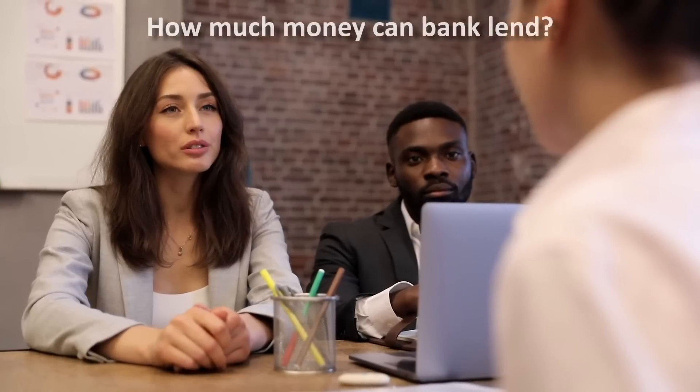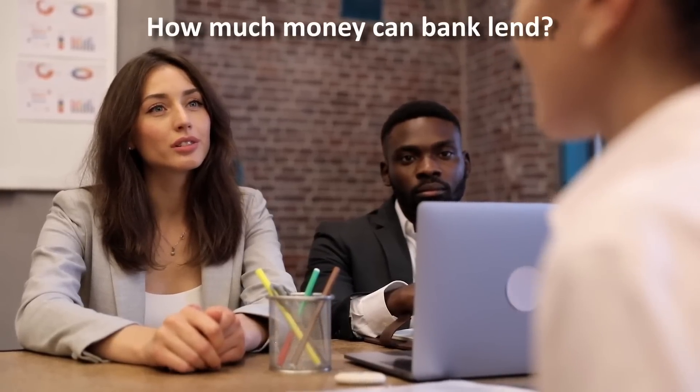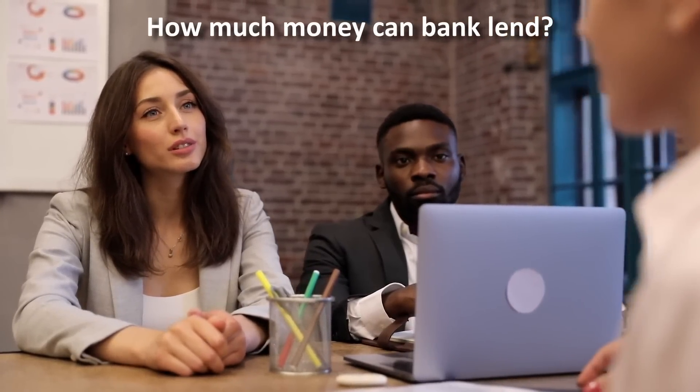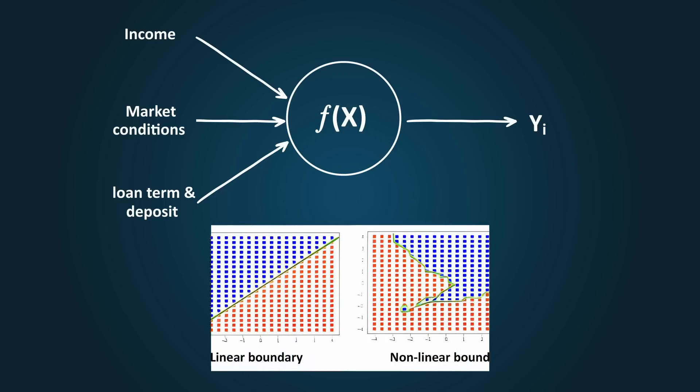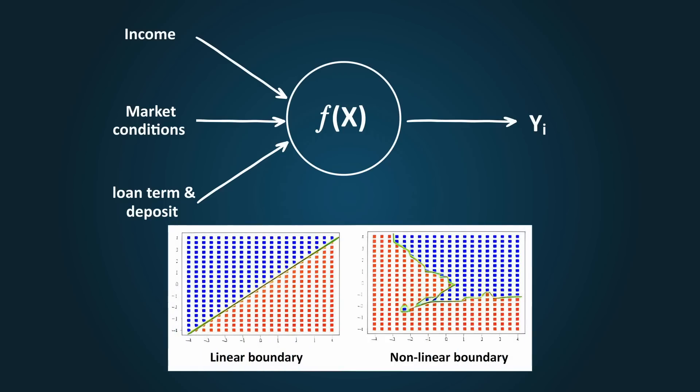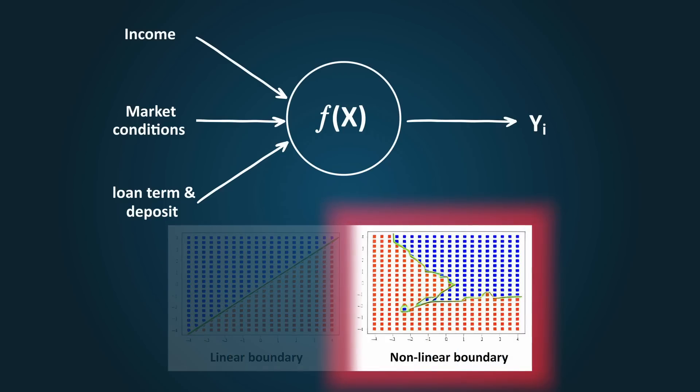For example, what if you are a mortgage lender at a bank and want to use an AI system to determine how much money you can lend a particular customer? In this case, many inputs would need to be taken into account. Things like the person's income, housing market conditions in the area, the loan term, amount of cash deposit, and a host of other factors. In this case, the output would not have such a distinct linear boundary. The output might look more like this chart on the right.